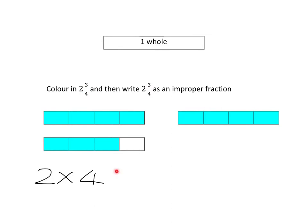So these three extra plus three, which gives us eleven. And so we've got two and three quarters written as an improper fraction is eleven quarters.